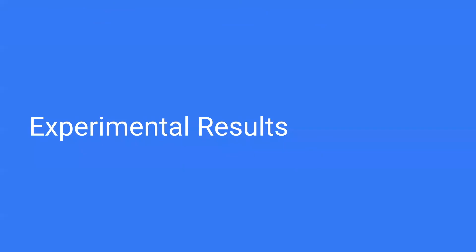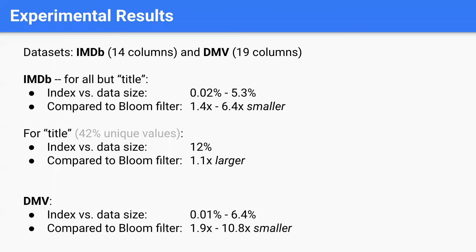Finally, let's look at a few numbers. Here are some results on IMDB and DMV data with 65,000 rows per stripe and a 1% false positive rate. On IMDB, we found KUKU Index to be 1.4x to 6.4x smaller than bloom filters, the only exception being the high cardinality column title for which KUKU Index requires 10% more space. However, KUKU Index is still favorable over bloom filters in this case since it does not produce any false positives for lookups with keys that occur in the data. On DMV, KUKU Index is consistently smaller than bloom filters, with space savings of up to more than 10x.